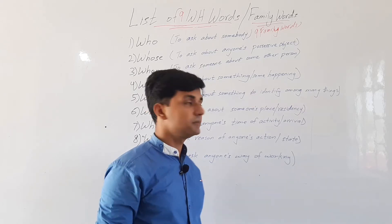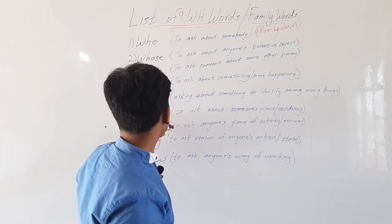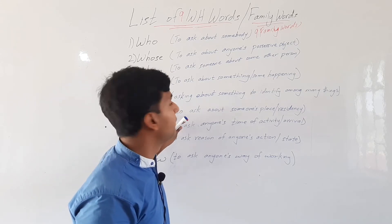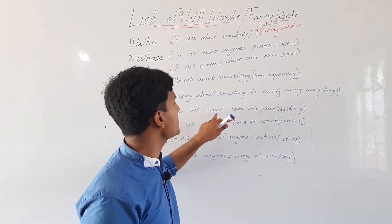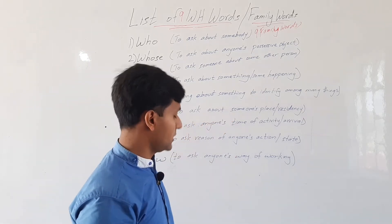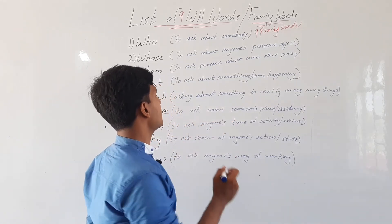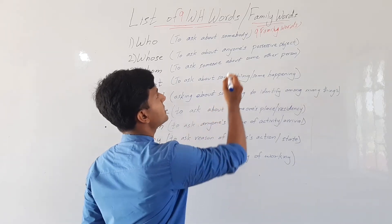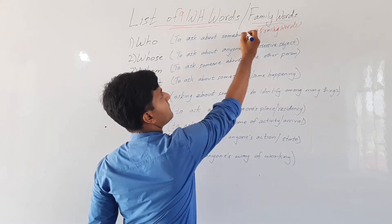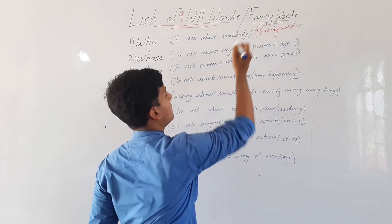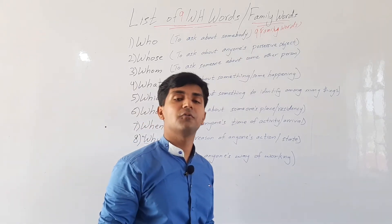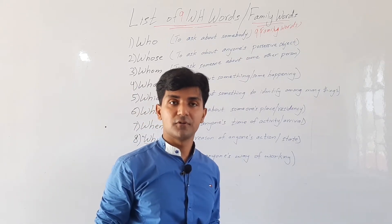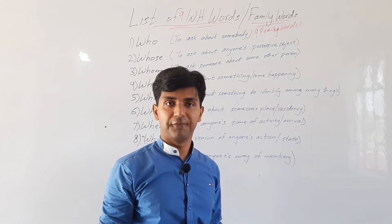Then there is the word 'where.' 'Where' is used to ask about someone's place or residency — where they are or where they live. For example, 'Where are you?' or 'Where do you live?' In that moment we use the word 'where.'